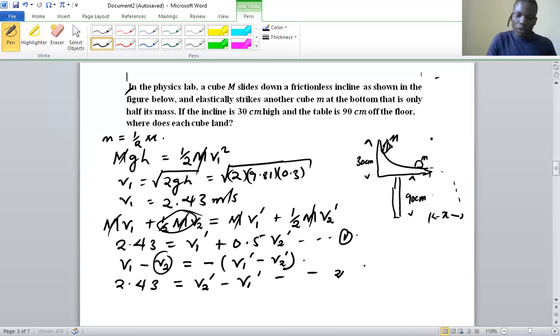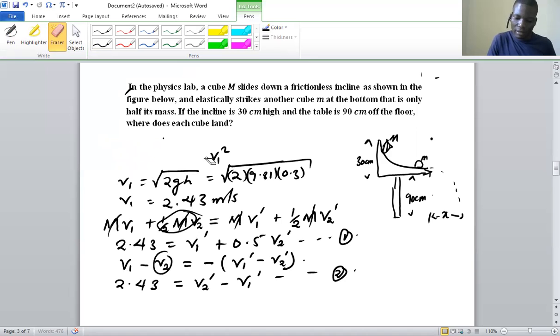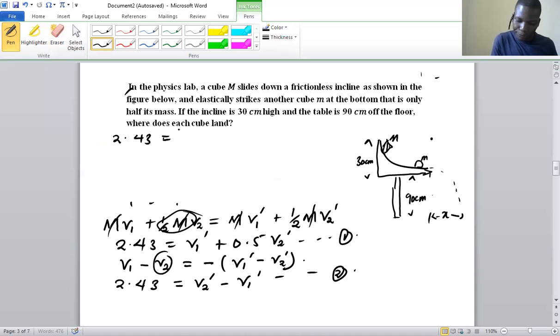So we can now use mathematics concepts of simultaneous equations to be able to calculate the values for v prime 1 and v prime 2 using equation one and equation two. We are going to have 2.43 equal to v1 prime plus 0.5 v2 prime. And then equation two will be 2.43 equal to v2 prime minus v1 prime.